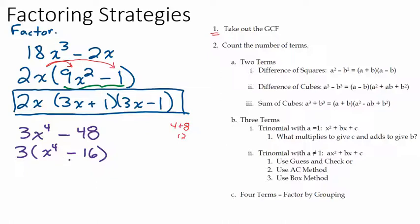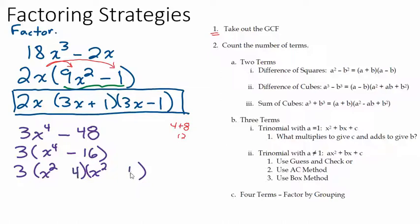Now let's look at what's left in the parentheses. We have two terms, so we check: difference of squares, difference of cubes, or sum of cubes? Well, x to the fourth is x squared times x squared, and 16 is 4 times 4. So that's the difference of squares — x squared times x squared is x to the fourth and 4 times 4 is 16. We make one a plus and one a minus, giving us x squared plus 4 times x squared minus 4.